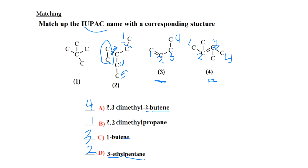Structure one clearly goes to B. You number it: one, two, three. At carbon two you have two methyl substituents. So it's 2,2-dimethylpropane.